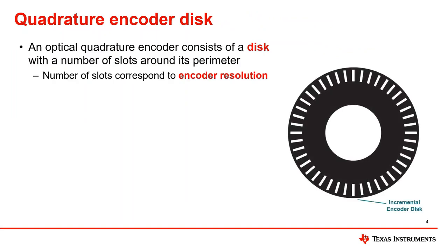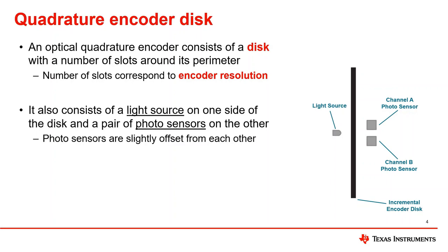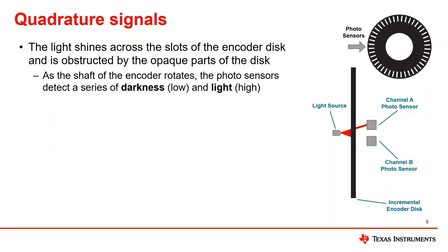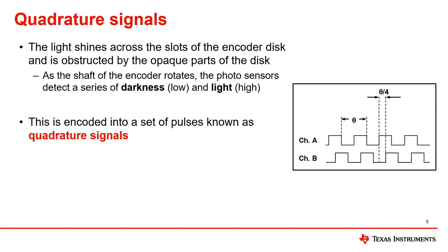An optical quadrature encoder is composed of a disk with a pattern of opaque and transparent slots along its periphery. The number of transparent slots on the encoder is known as the encoder resolution — the more slots an encoder has, the more precise the encoder position. Turning the encoder to its side, an optical quadrature encoder also consists of a light source on one side of the disk and a pair of photosensors on the other. These photosensors are responsible for producing the encoded pulse signals. They are offset from each other with respect to the light sensor, resulting in a phase difference in the generated pulse signals. The light source shines against the encoder disk — light passes through the transparent slots and is obstructed by the opaque parts. As the shaft rotates, the photosensors detect a series of darkness and light similar to a PWM signal consisting of low and high signals.